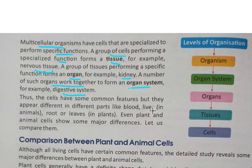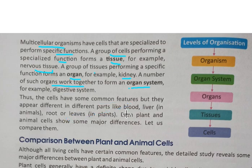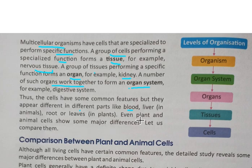Cells have some common functions and features, but they appear different in different parts of the body — like blood cells, liver cells, and root cells. They are each different from one another. Let us compare plant and animal cells.